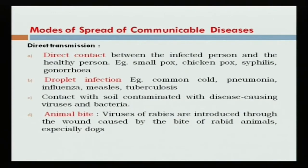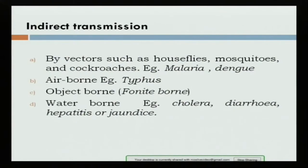Animal bite is another mode — for example a dog bite can cause rabies. If the dog is not vaccinated, it causes rabies. Indirect transmission by vectors such as house flies, mosquitoes and cockroaches spreads diseases like malaria and dengue. Dengue has had a big impact in recent years, causing very low platelet counts, which is dangerous.